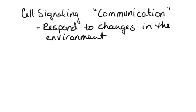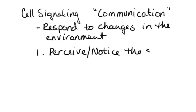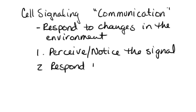When we talk about this communication, it is going to be important that, first of all, cells are able to perceive or notice the signal — or the message, if you will — and then after they perceive or notice that, they're going to have to be able to respond to that signal. So this is all about communication. One cell is going to be putting out a signal or a message, and then we're going to want to be able to respond to that by doing something inside of the cell.